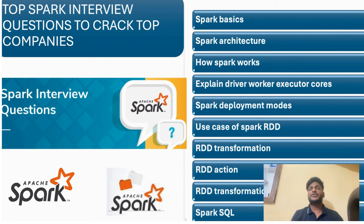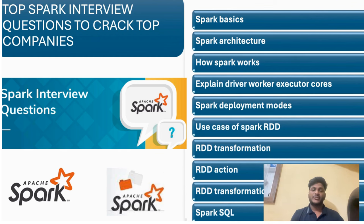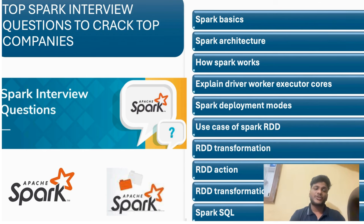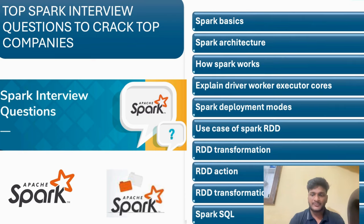For example, they can ask: is union an action function or a transformation function? Union is definitely a transformation function. A follow-up question is whether union is a wide or narrow transformation. Union is a narrow transformation because it requires less shuffling of data. They can also ask about the use case of action functions in Spark — this type of question comes up regularly in industry interviews.